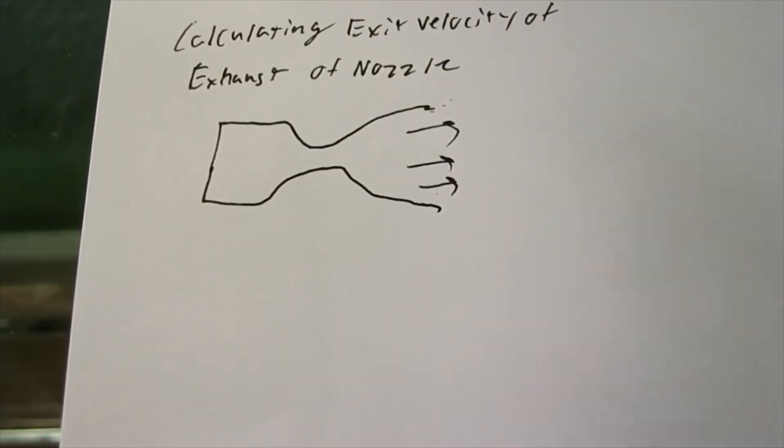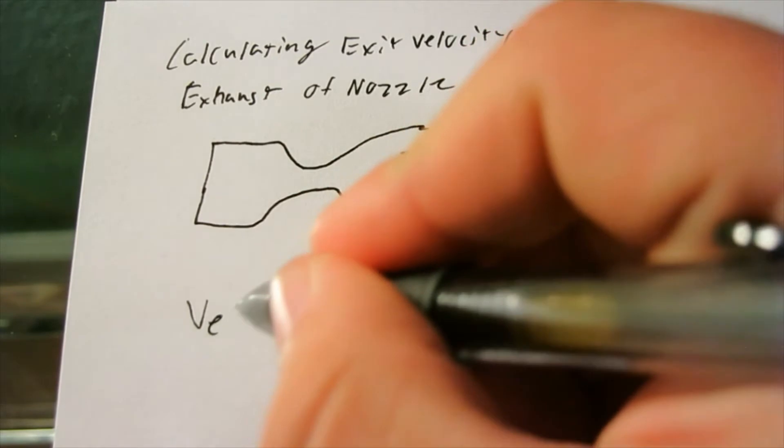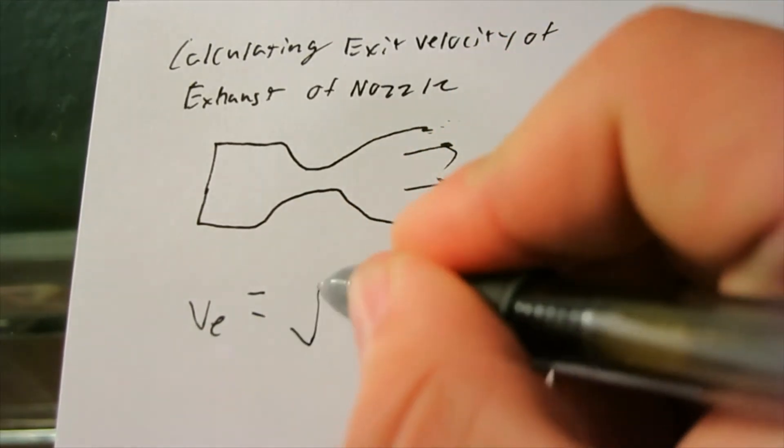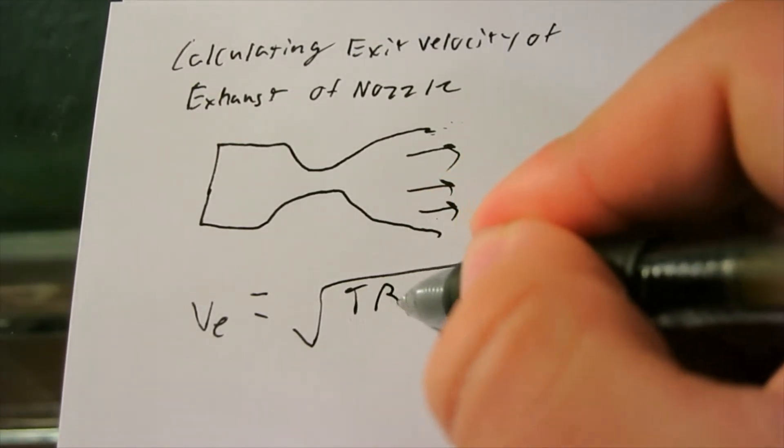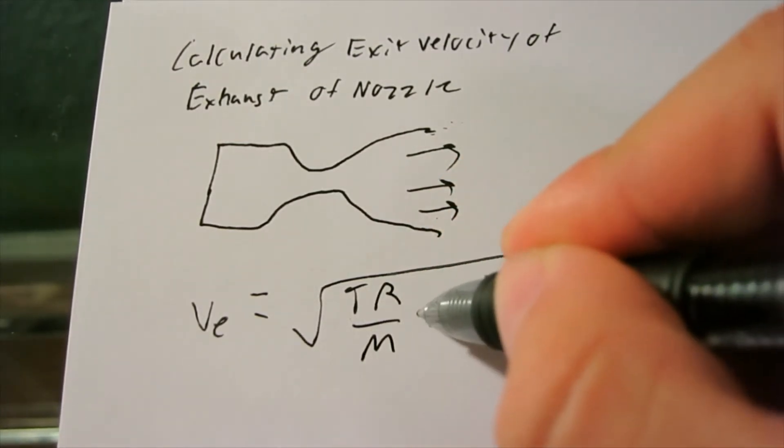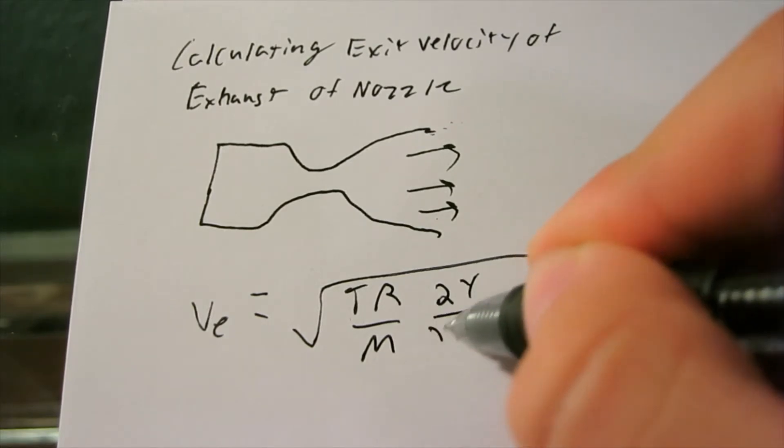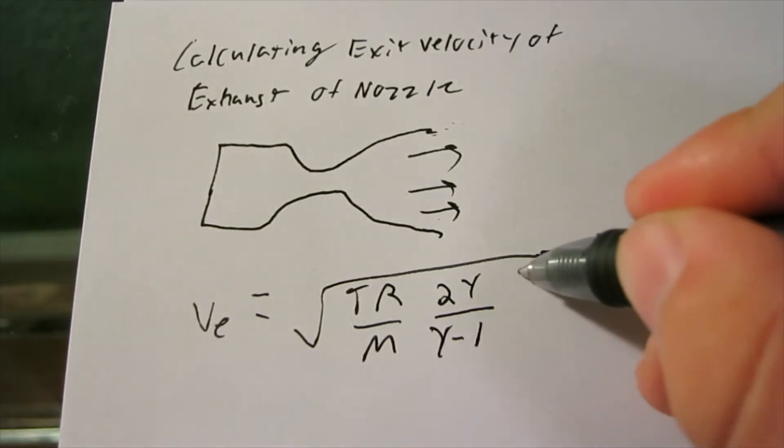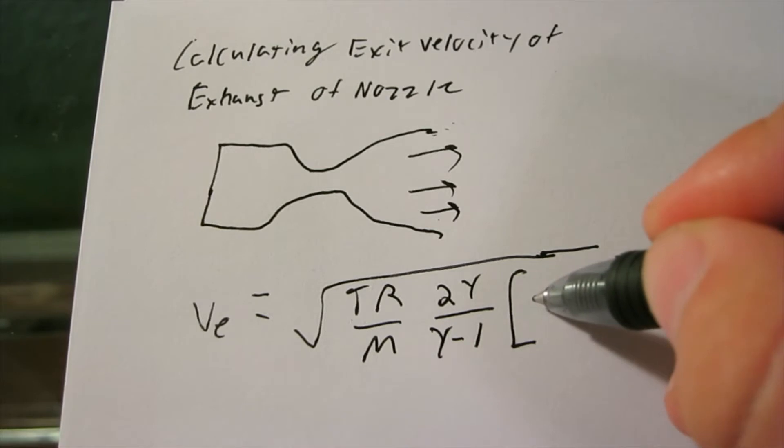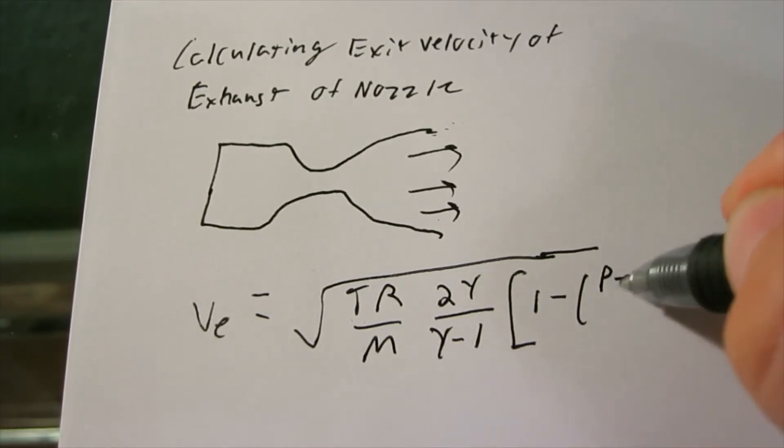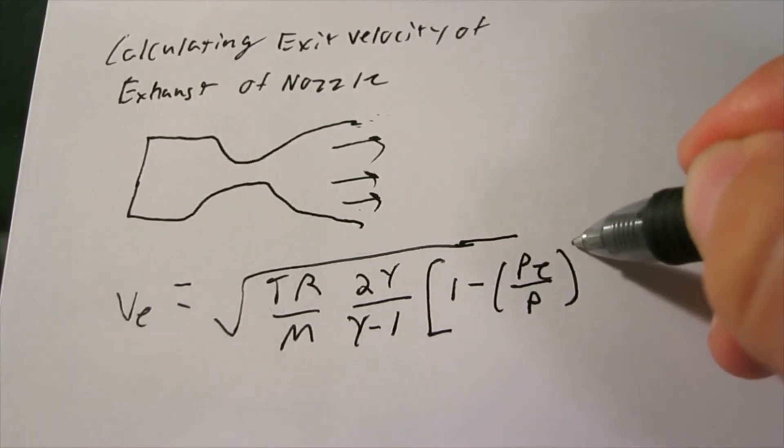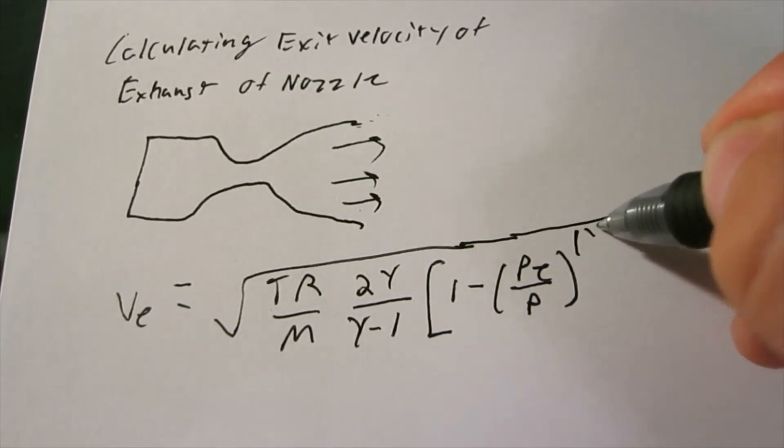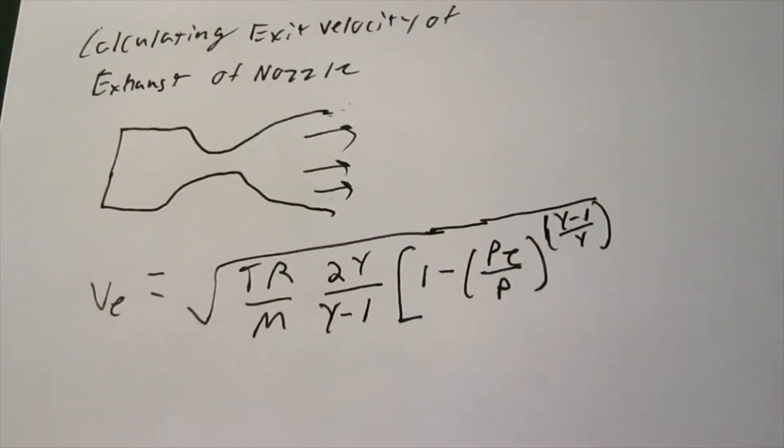I'm not going to derive the equation, but I'm just going to give it to you. The velocity at the exit equals the square root, and we'll go over what these variables mean in a second. T, R, divided by M, times 2 gamma, divided by gamma minus 1, square, and in brackets here, we've got 1 minus PE divided by P, 2 gamma minus 1 divided by gamma. That's the exponent there.